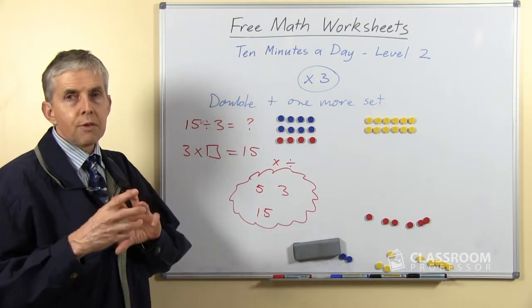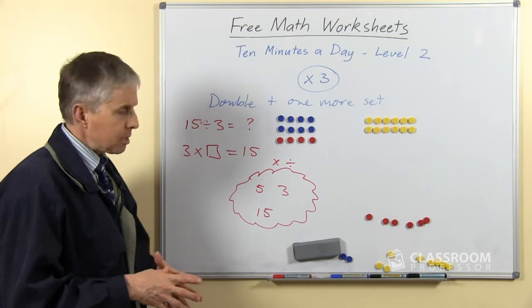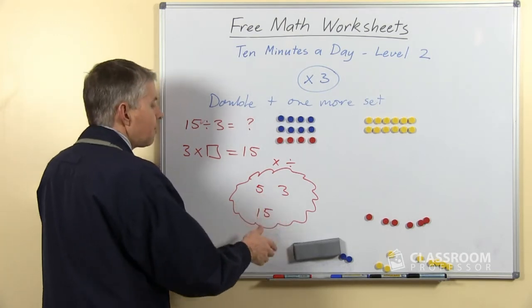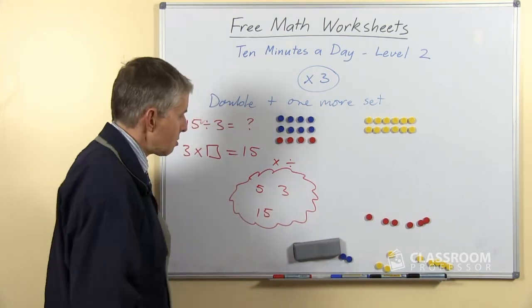And which of course give us the numbers that we need for 4 different number facts in multiplication and division: 5 threes are 15, 3 fives are 15, 15 divided by one of them equals the other one, and so on.